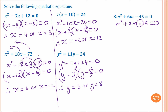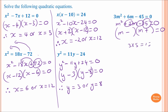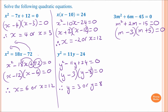To factorize, the sign is negative so we use one plus and one minus immediately: (m + _)(m - _) equals zero. Two numbers multiplied together must give 15 and their difference is 2. 15 is 3 times 5 and the difference is 2. Because we have positive 2, the larger number goes on the positive side — so 5 here and 3 here. Therefore m equals negative 5 or m equals 3.